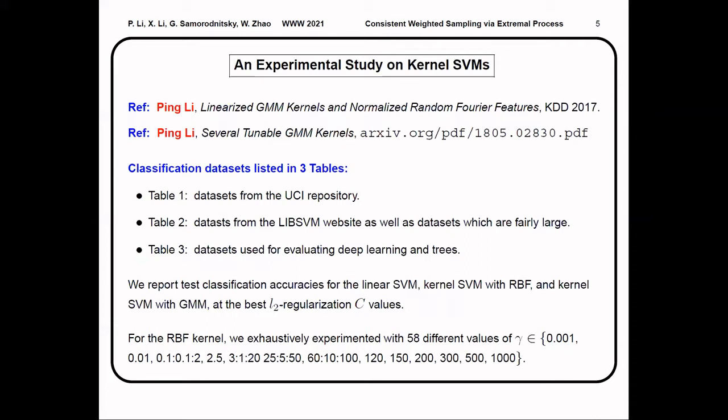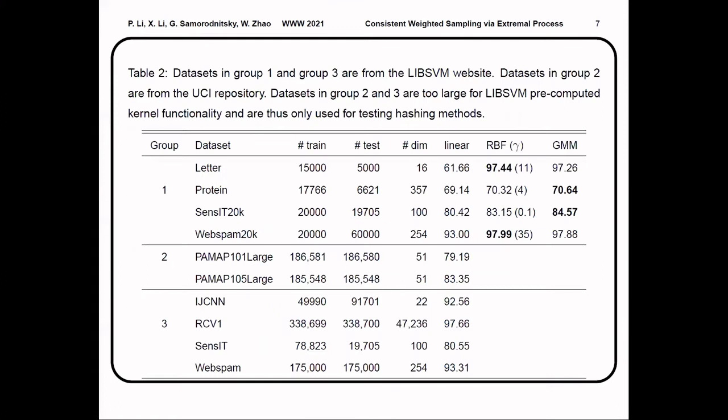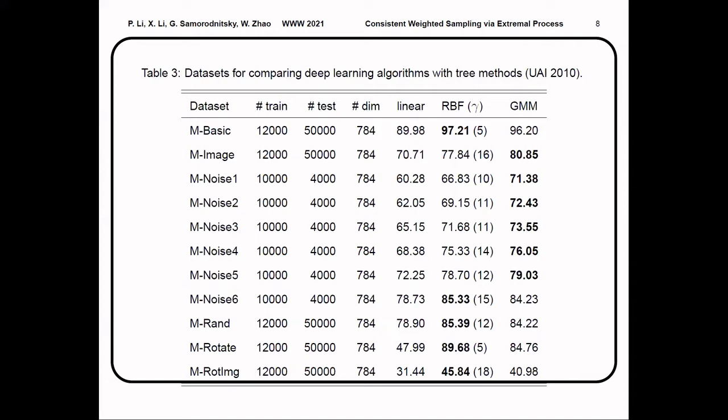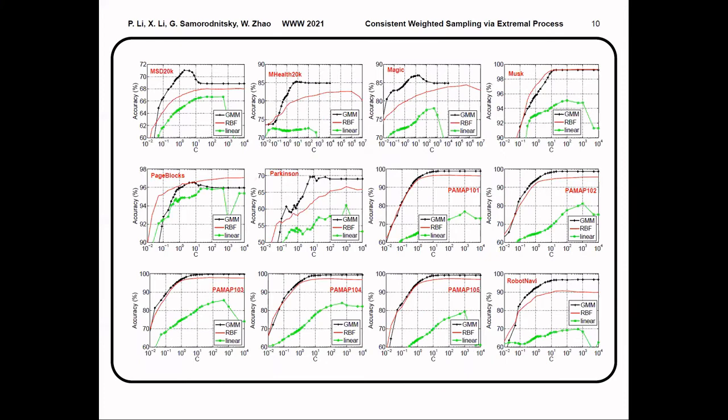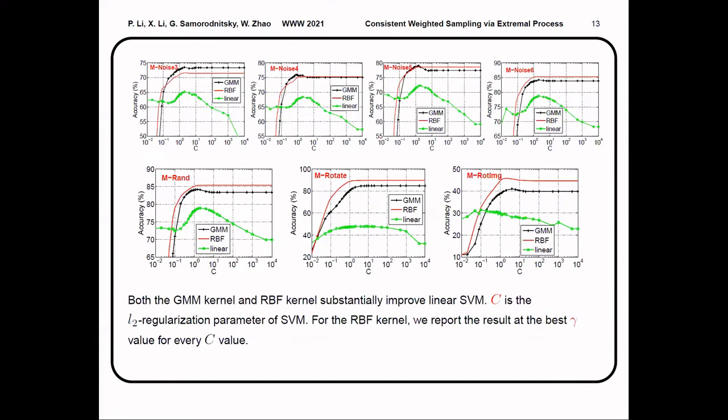We compare the GMM kernel with RBF kernel on extensive datasets. From the results presented in these tables, we see that GMM outperforms the RBF kernel on many datasets. And from the figures of test accuracy against the regularization parameter C in SVM, we further confirm the advantage of GMM on many datasets.